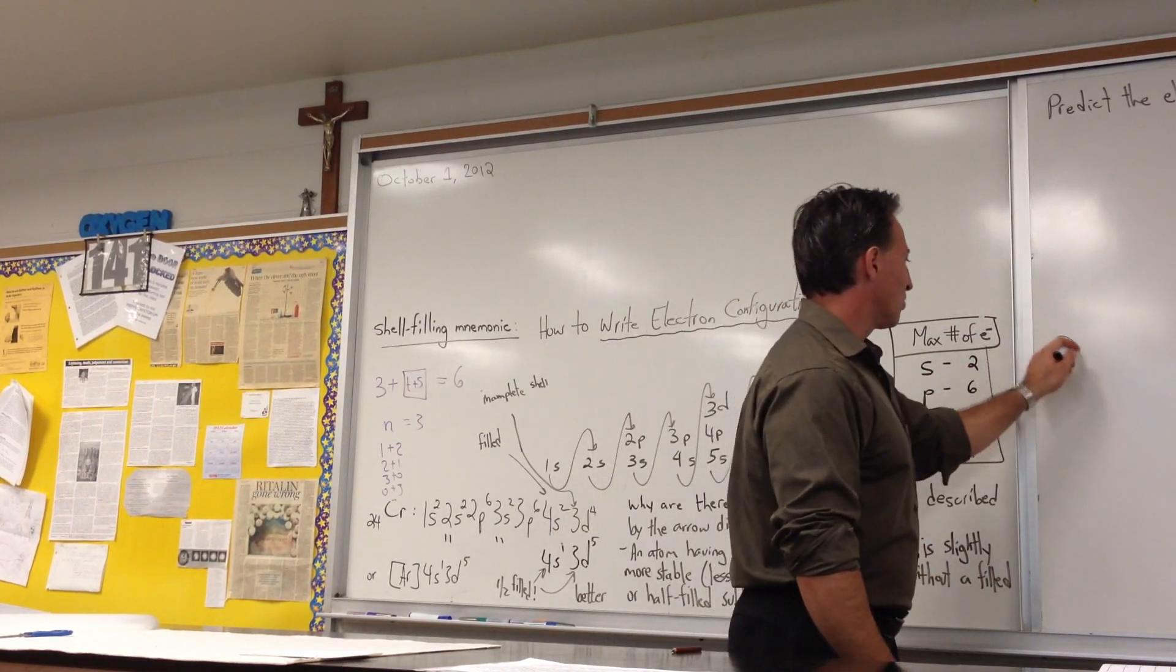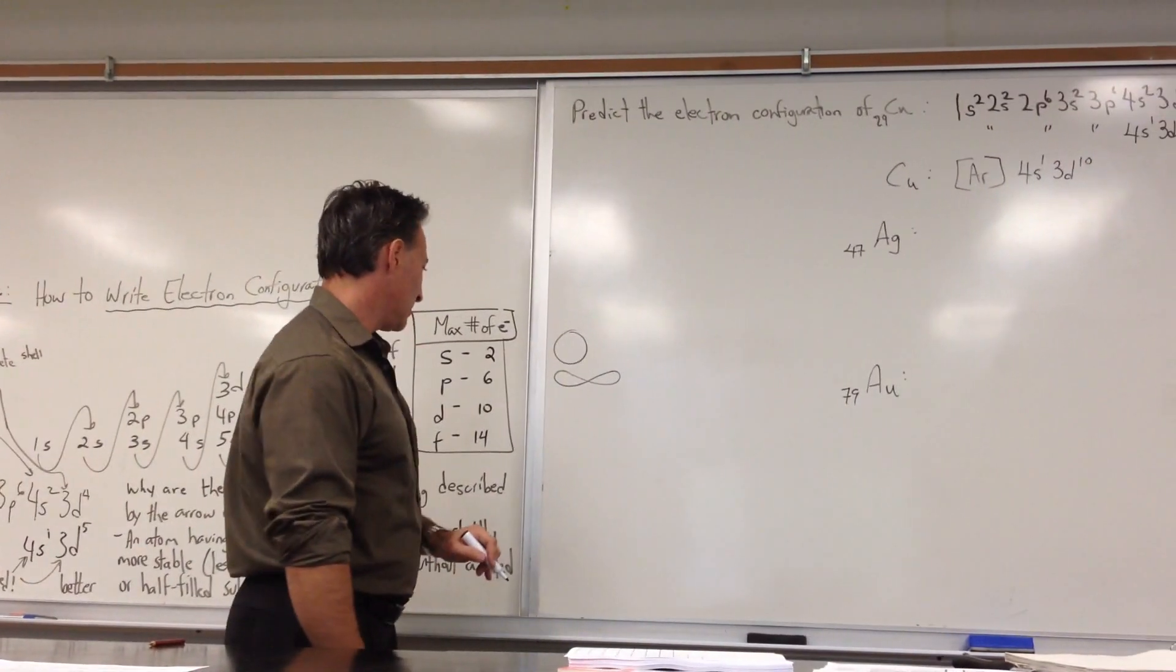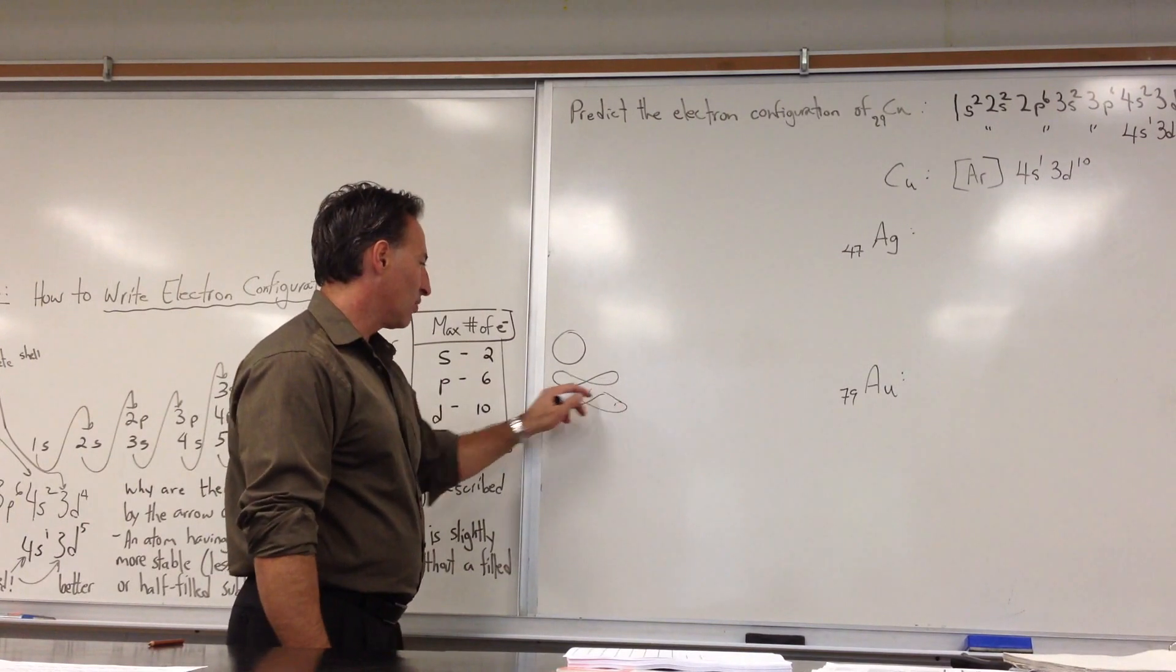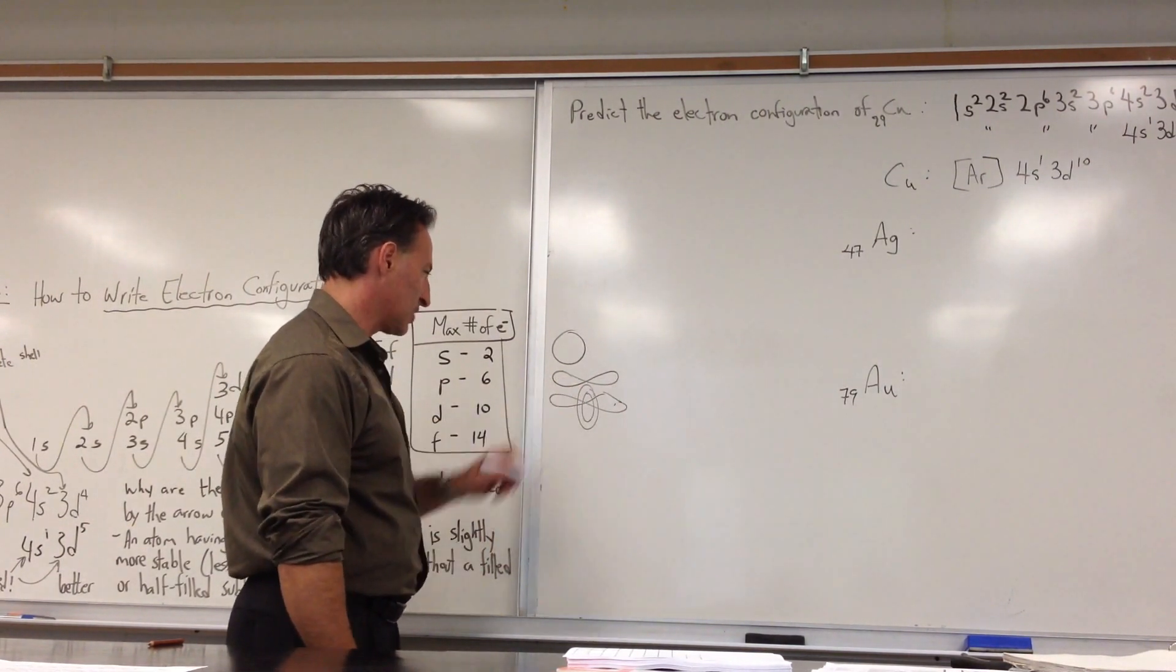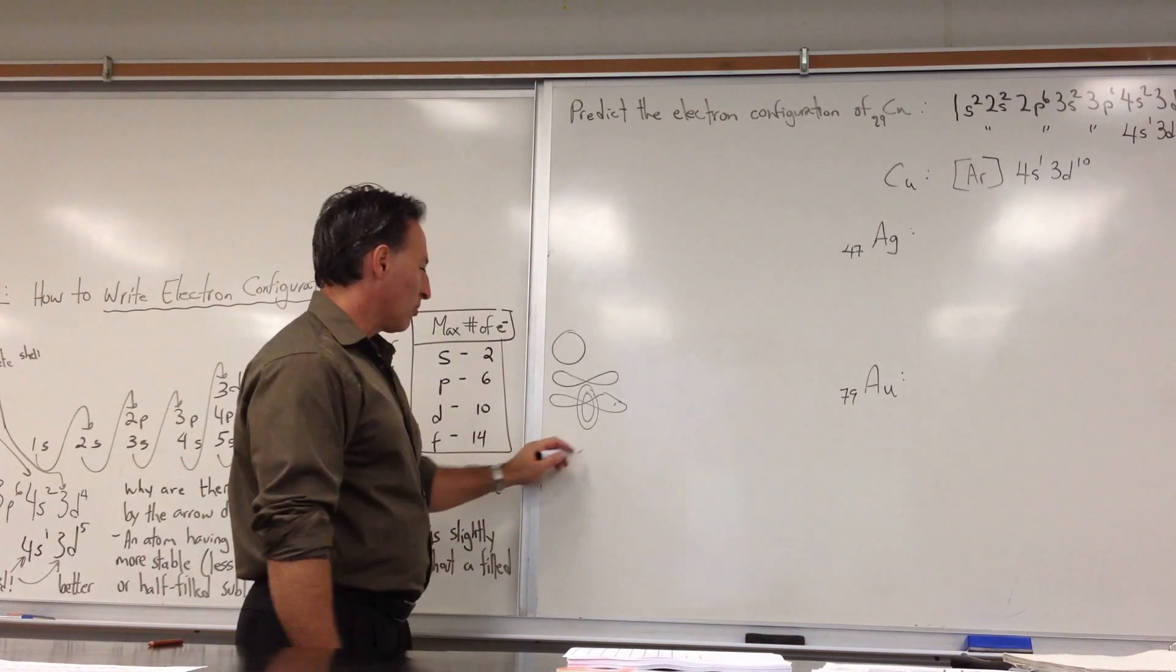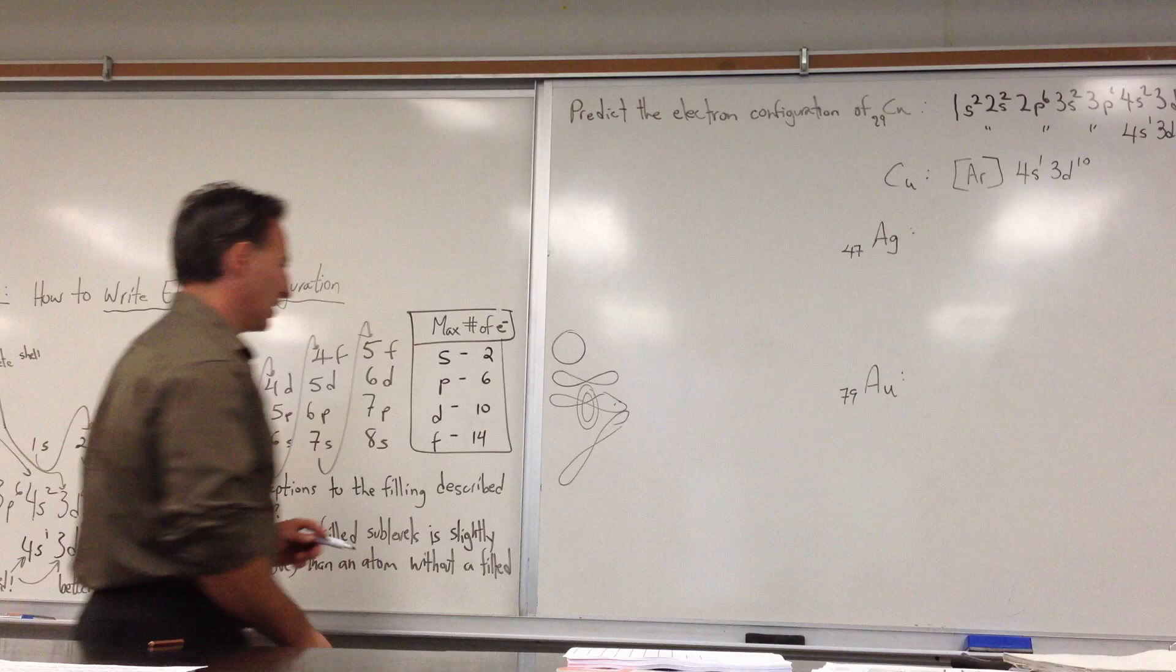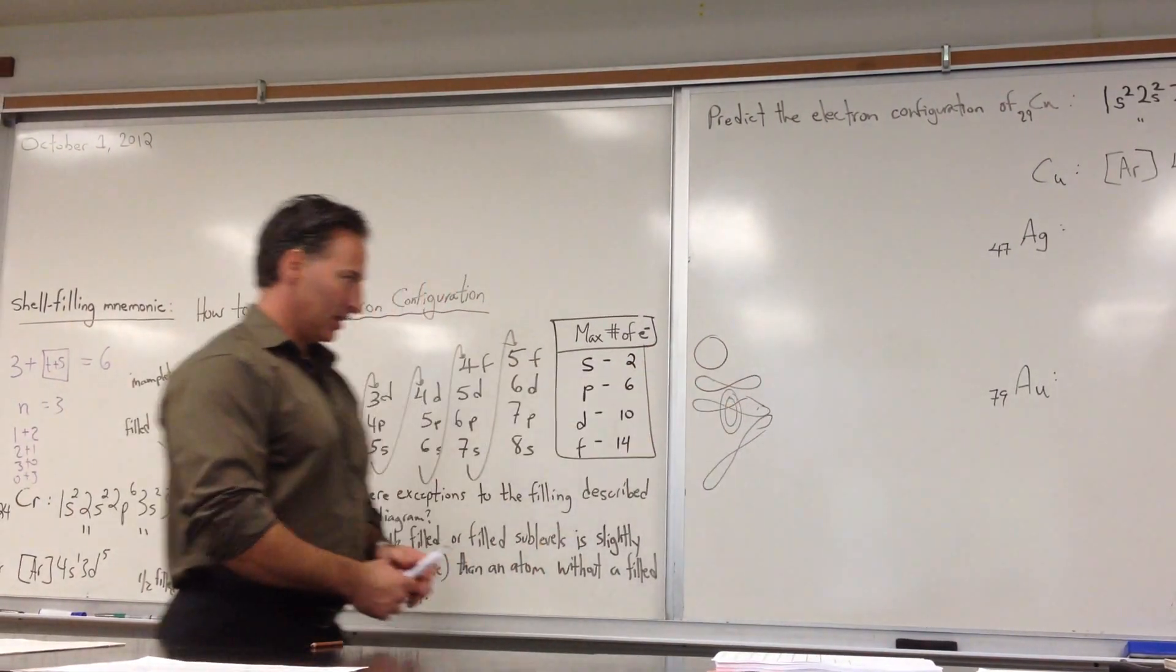We know that S orbitals are spherical, P orbitals are lemniscate, which means they're like figure 8s. The D orbitals also are lemniscate, but slightly more elongated, they're a bit longer, and one of them actually has a toroidal shape, it looks like a donut mixed with a lemniscate. And the F orbitals are very oblong lemniscates, they're very stretched out and skinny, and they're oriented all in different directions, so that the electrons don't interfere with each other.